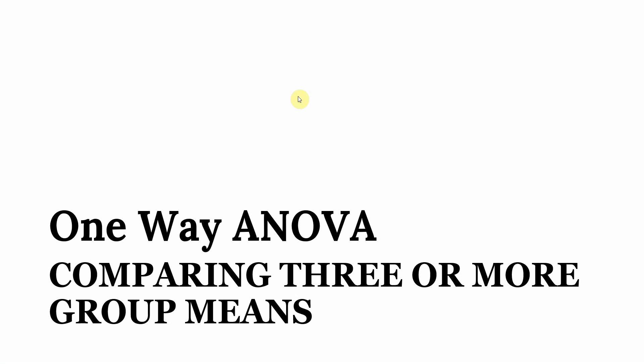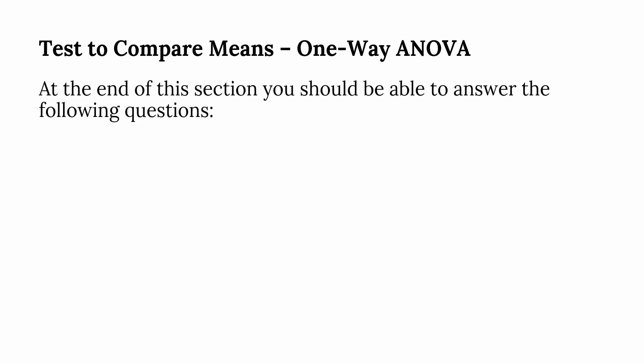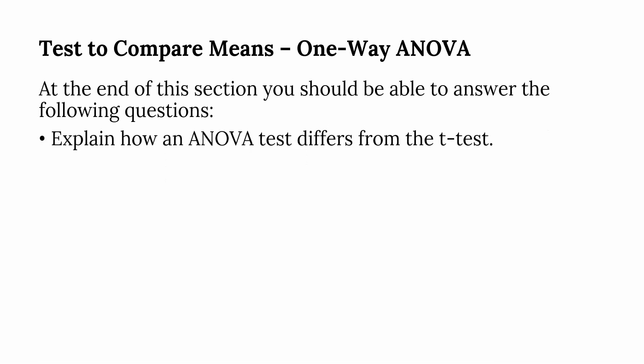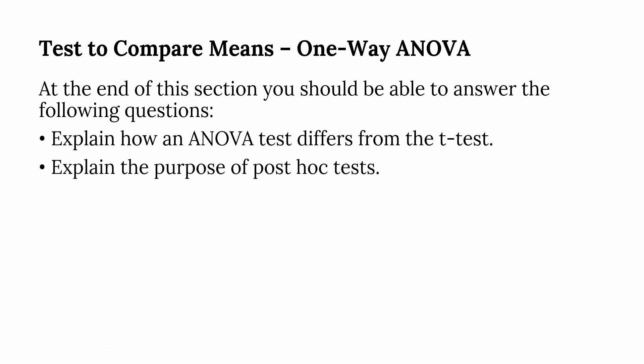One Way ANOVA: Comparing Three or More Group Means. This session aims to test and compare means using One Way ANOVA. At the end of this session, you should be able to answer the following questions: explain how an ANOVA test differs from the t-test, and explain the purpose of post-hoc tests.